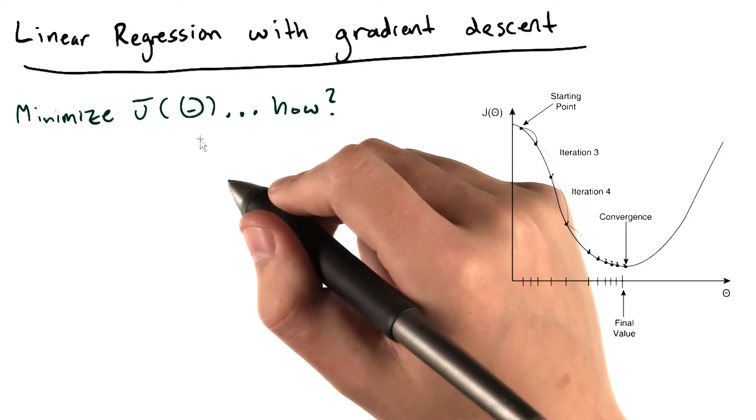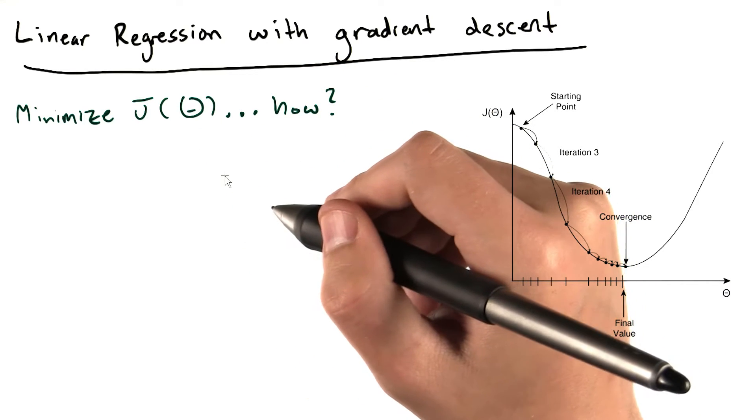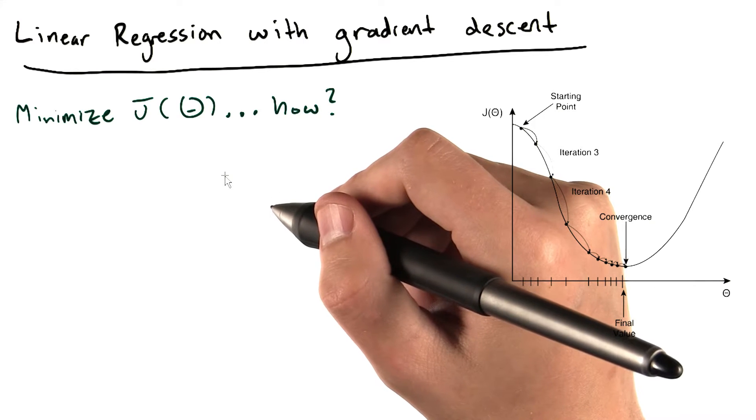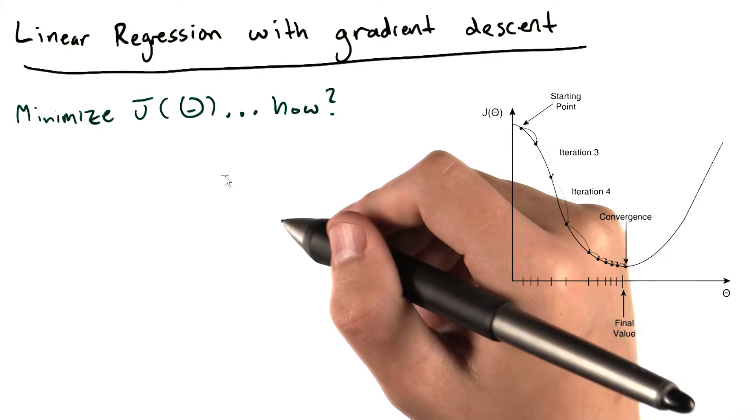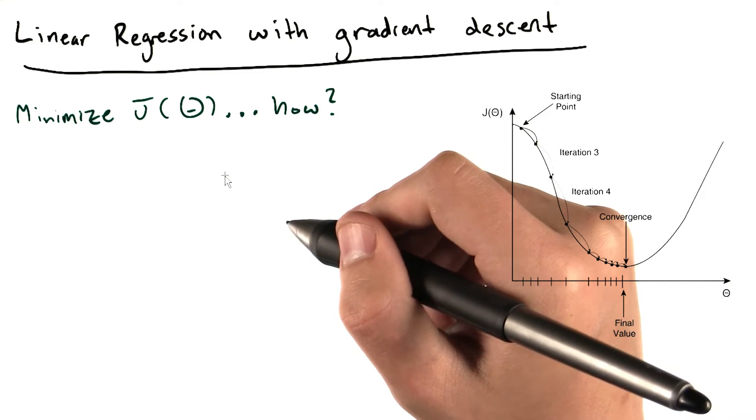We'll use a search algorithm that takes some initial guess for theta and iteratively changes theta so that J of theta keeps getting smaller until it converges on some minimum value. The algorithm we're going to discuss is called gradient descent.